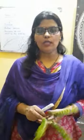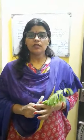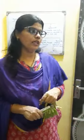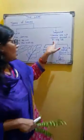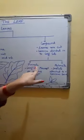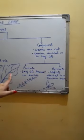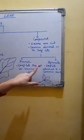Axillary bud is present at the whole leaf's axis, and hence this is a single leaf divided into various leaflets. So it is an example of compound leaf. Compound leaves have cut lamina which divides it into a number of leaflets. Compound leaf is again of two types: pinnate and palmate.